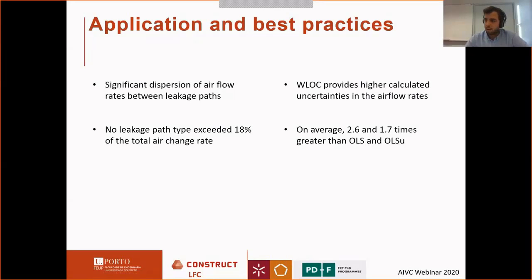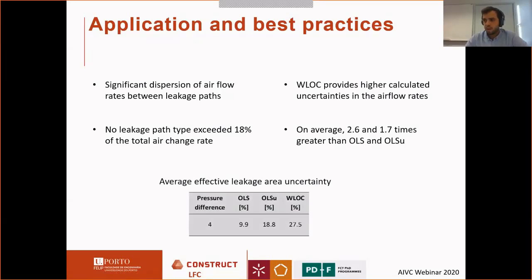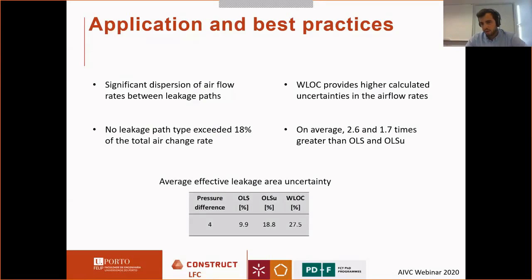These results are for single pairs of pressurization and depressurization measurements. For the effective leakage areas, looking at the average of the sealing steps, it is almost three times higher, but the ranges are more expressive. With the ordinary least squares from the ISO, in the first step we got 7 percent uncertainty at 4 pascals, but in the last sealing step it was 13 percent. With the weighted line, we started with 17 percent at the first offset and reached 37 percent in the last step after 11 steps.